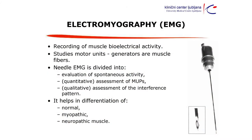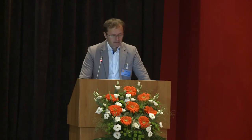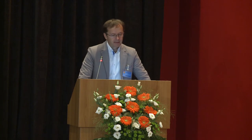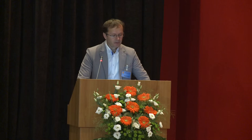Electromyography records muscle bioelectrical activity and studies motor units, which are generators of that activity. We can divide the examination into three parts: first, observing spontaneous activity; then assessing motor unit potentials; and finally observing the interference pattern. This data helps complete a pattern that tells us what is going on, allowing us to differentiate between normal, myopathic, and neuropathic muscle.